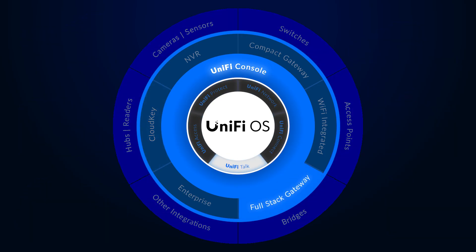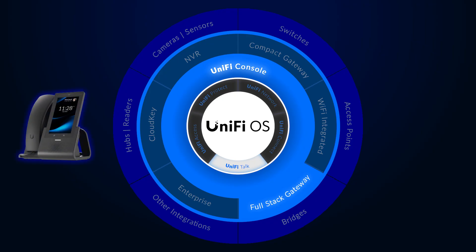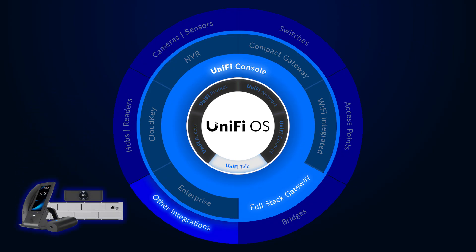UniFi Talk is designed to bring PBX functionality specifically for Ubiquiti's range of IP phones. Right now, the range of compatible hardware is small and the Talk subscription is currently limited to three regions. If you're outside of those regions, as we are, you'll only be able to manage the Talk-compatible devices and use them with a third-party PBX system. These IP phones will fall into the other integrations category going forward.